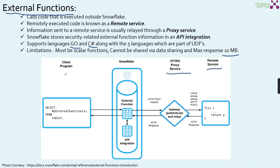To understand the picture in more detail: our client program — Snowflake's SnowSight web UI — fires a query like select my_external_function from table_1. This calls the external function, which is integrated with the API integration where security information is stored. It passes information to the proxy service via the gateway, which then calls the AWS Lambda, Azure, or GCP function, gets the result, and pushes it back to the client program.